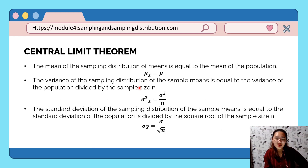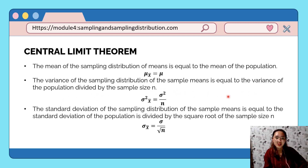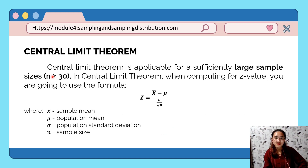Since the Central Limit Theorem deals with infinite population, we will use these formulas: the sample mean is equal to the mean of the population; the variance is equal to the variance of the population divided by the sample size; and the standard deviation is equal to the standard deviation of the population divided by the square root of the sample size.